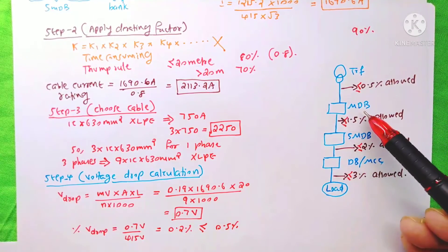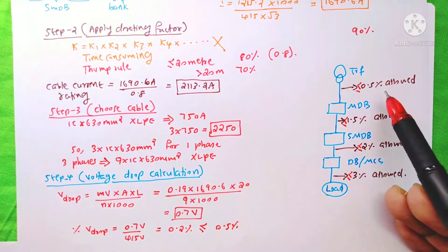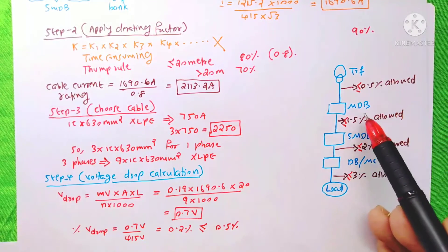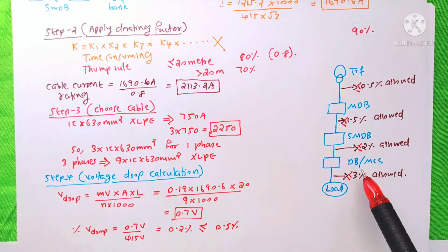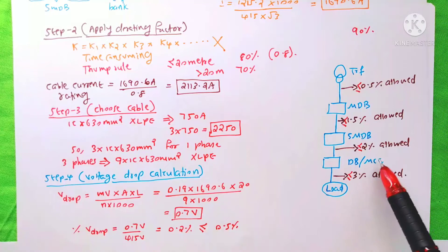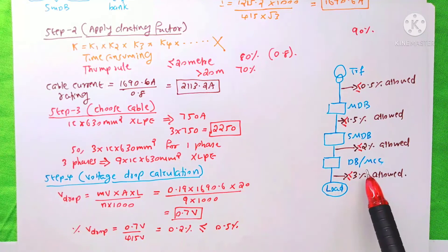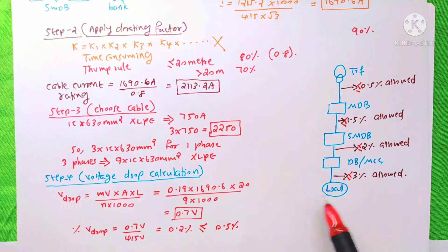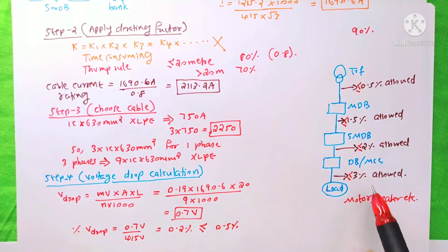Between transformer and MDB, the maximum allowable voltage drop is 0.5%. Our 0.2% is less than 0.5%, so the cable passes the voltage drop check. Between MDB and SNDB, 1.5% is allowed; between SNDB and DB or MCC, 2% is allowed; and between DB/MCC and the final load (motor, heater, etc.), 3% is allowed.